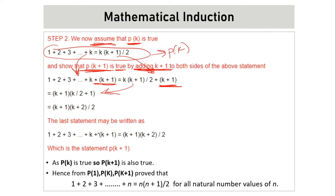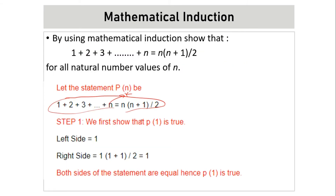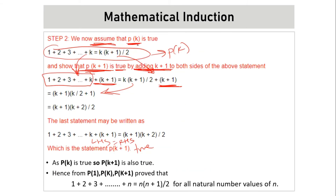This can be elaborated — the RHS is K into K plus one divided by two plus K plus one. When we solve both LHS and RHS, we get LHS equal to RHS, which is the statement P of K plus one being true. Since we assumed P of K is true, P of K plus one is also true. Hence, from P of one, P of K, and P of K plus one, we can prove that the given equation is true for all natural numbers n.